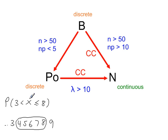In this example, for x to be more than 3 and at most 8, we're looking for 4, 5, 6, 7, and 8. The boundary between what we want and what we don't want on the left-hand side is 3.5 and on the right-hand side is 8.5. So x is between 3.5 and 8.5 for the normal distribution.